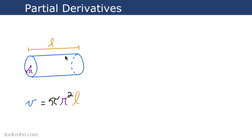Here is a sketch of a cylinder. The volume of a cylinder, shown in blue, is equal to pi — the constant 3.14 and so on — times the radius squared, r squared, times l, the length of the cylinder.